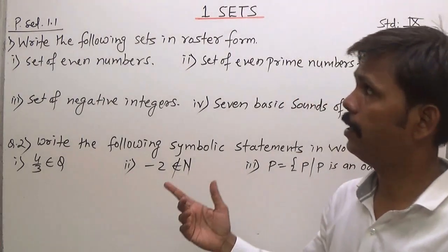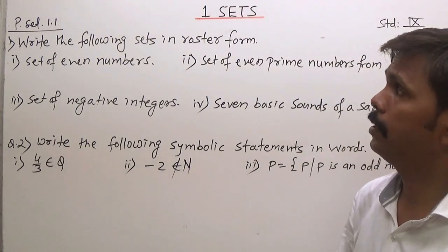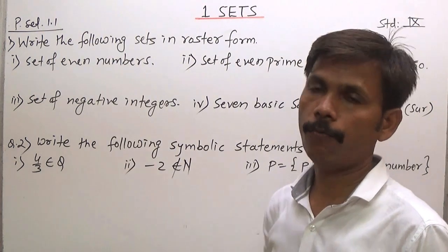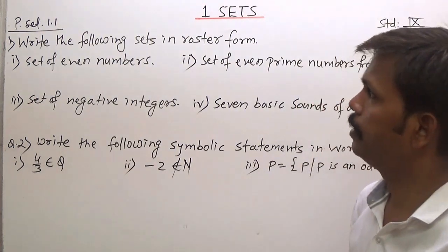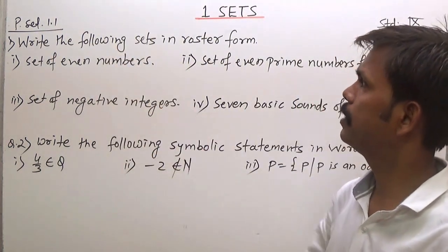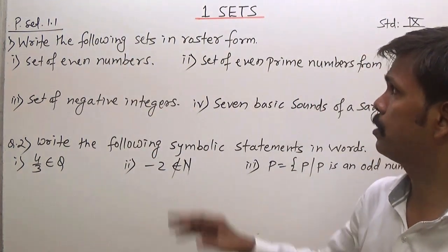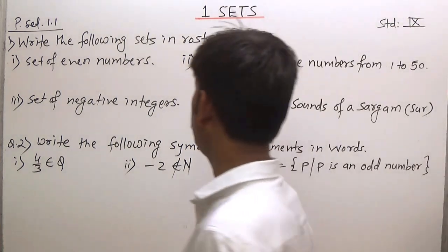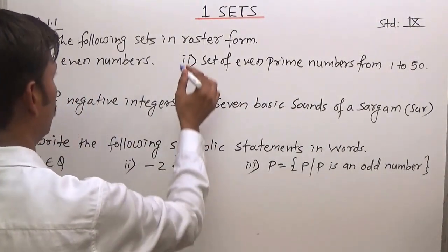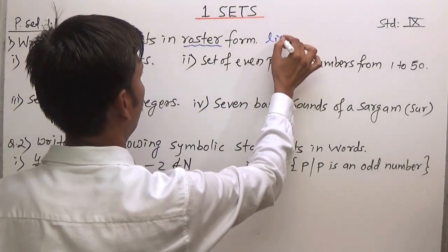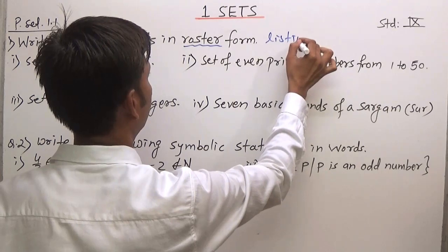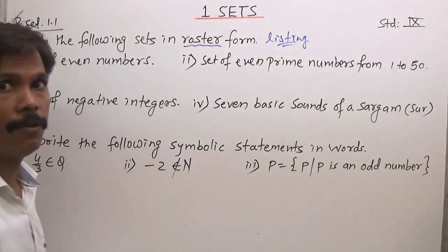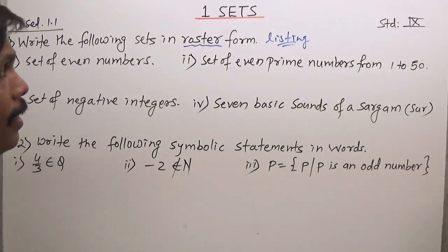Okay, now friends, we will start question number one of 1.1 practice set. The first question is: write the following sets in roster form. The roster form, another name, is the listing method. We have to prepare a list.